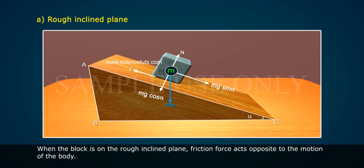Rough inclined plane: When the block is on the rough inclined plane, friction force acts opposite to the motion of the body.